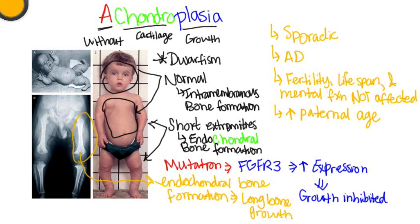In summary, achondroplasia refers to impaired cartilage proliferation that inhibits growth plate and long bone formation. These individuals end up with short extremities, however their head and trunk are normal. The mutation is an overexpression of FGFR3 receptor, which leads to inhibition of growth.